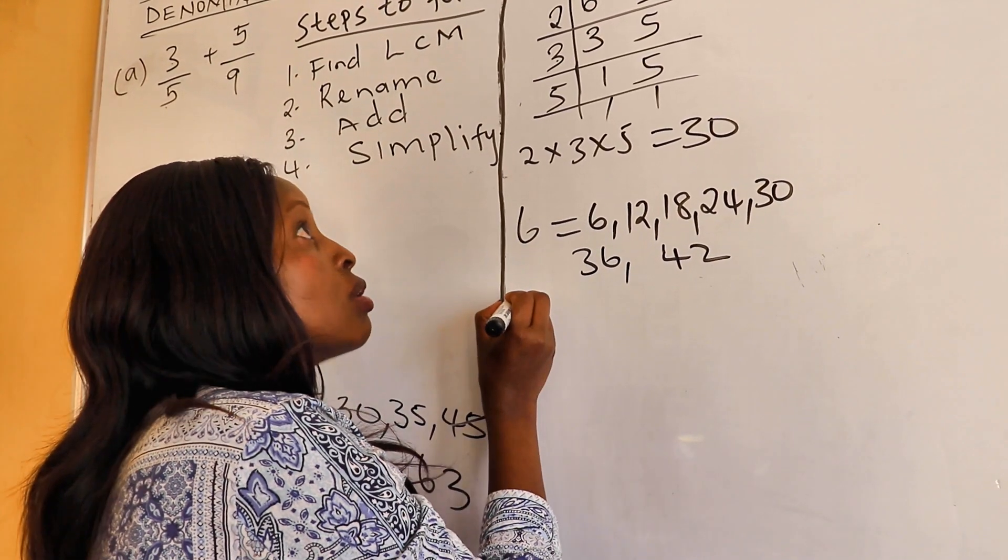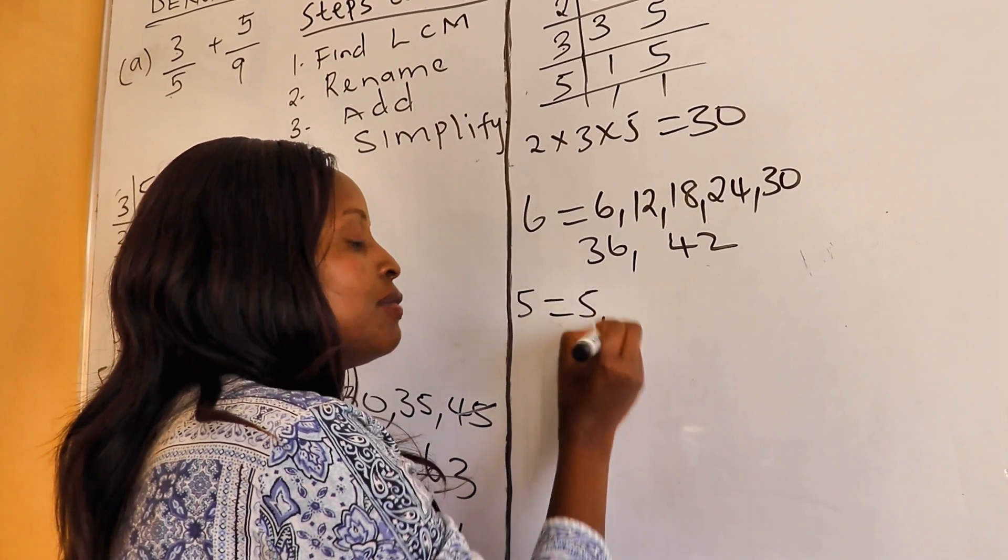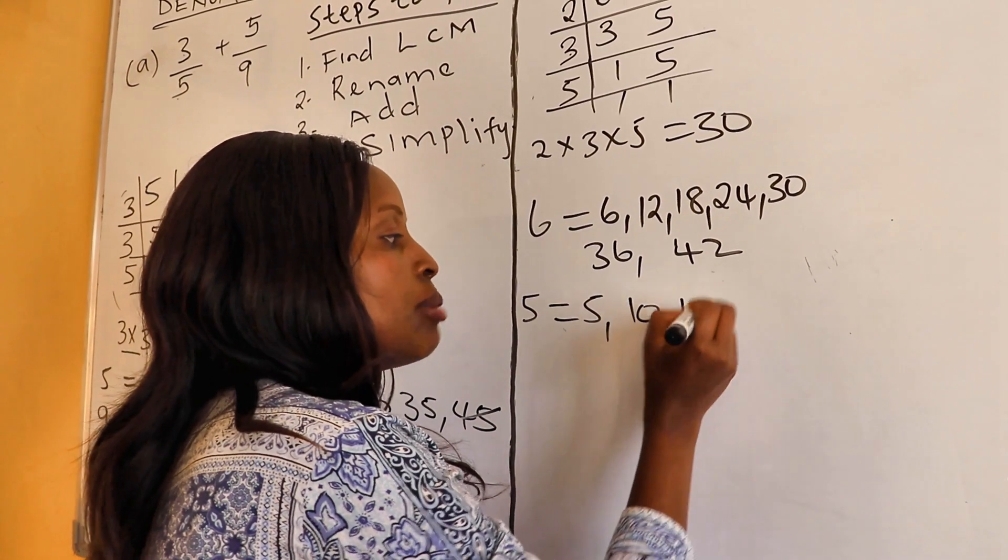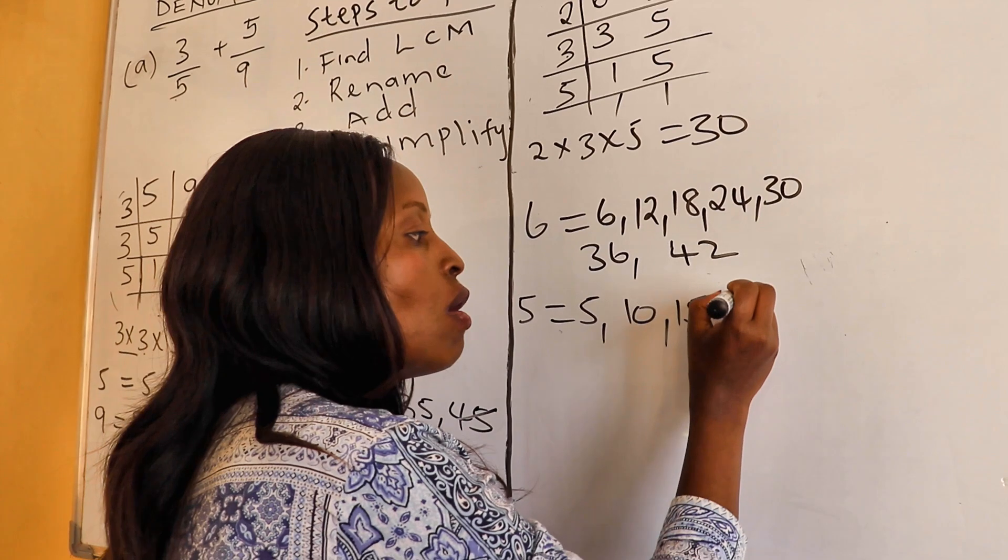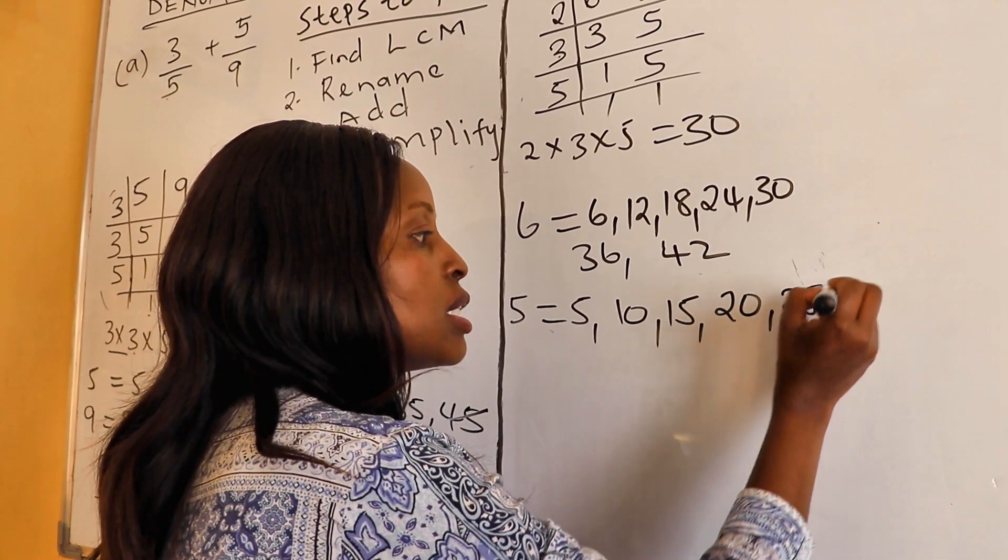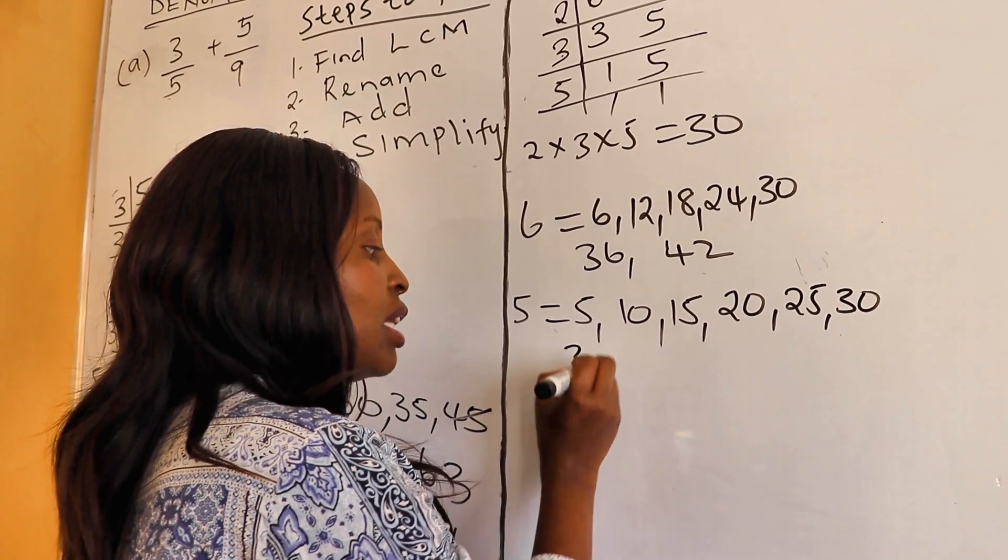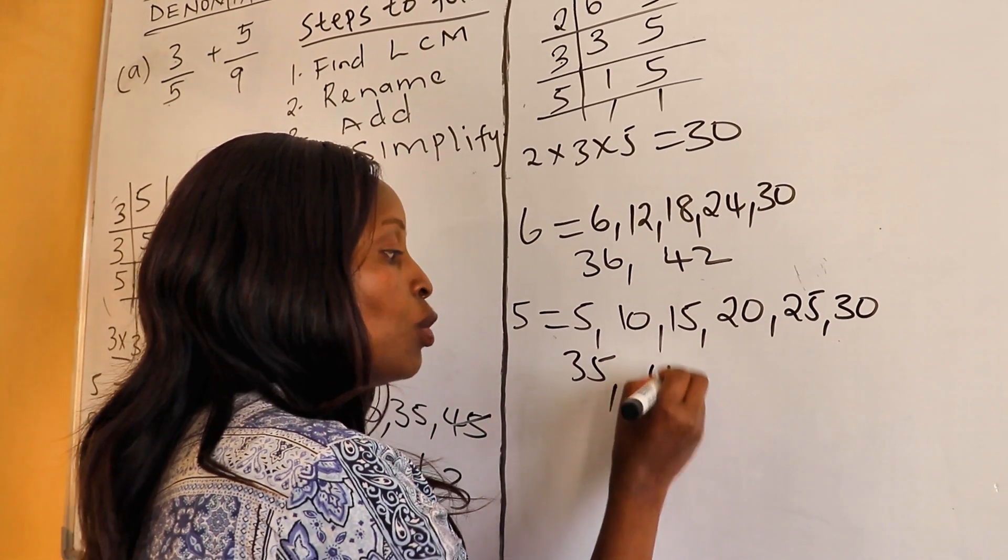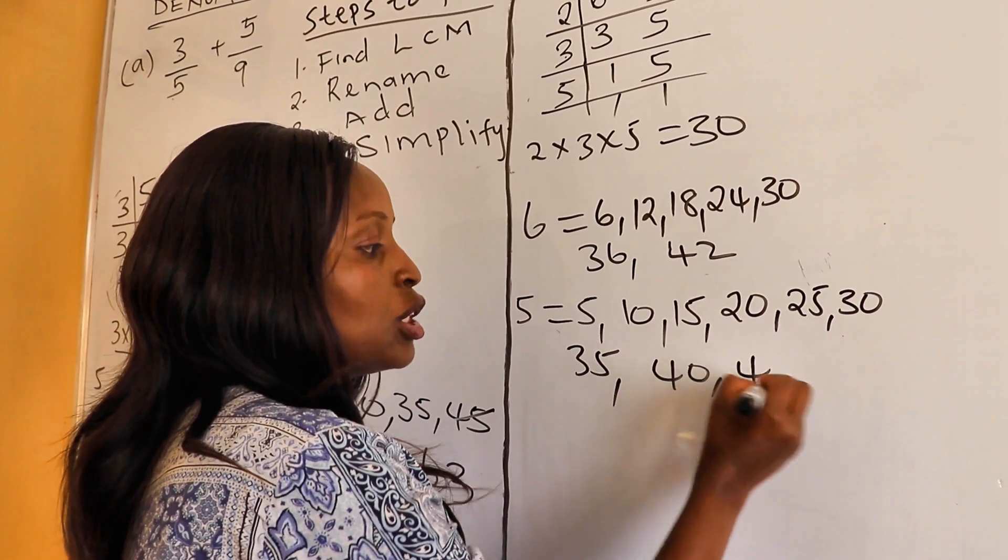Let's get also the multiples of 5. 5 times 1 is 5, times 2 is 10, times 3 is 15, times 4 is 20, times 5 is 25, times 6 is 30, times 7 is 35, times 8 is 40, times 9 is 45.